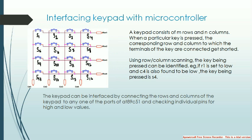This is how the keypad will be interfaced with the microcontroller. We plan to use either row or column scanning. When a particular key is pressed, the terminals connected to the key will get shorted. For example, if R1 is set to low and C4 is also found to be low, then you can identify the key being pressed as S4.